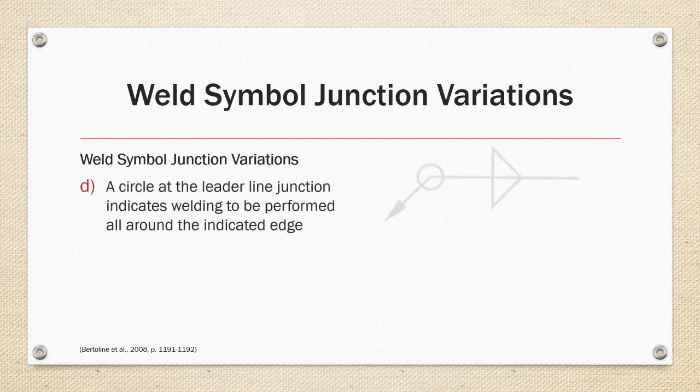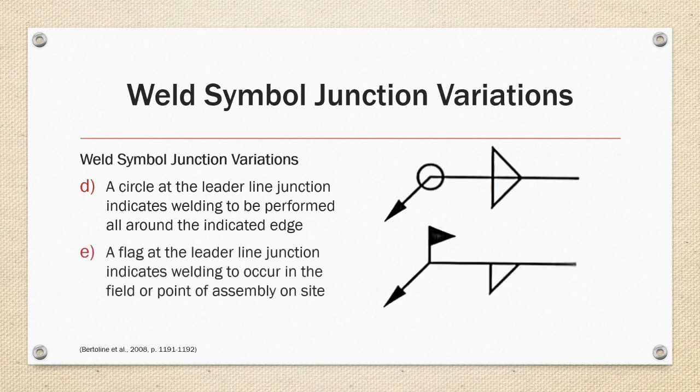Weld symbol junction variations: a circle at the leader line junction indicates that welding is performed all the way around an indicated edge — a full loop chain. A flag at the leader line junction indicates that welding occurs in the field, or at the point of assembly on site, and not in a factory setting.